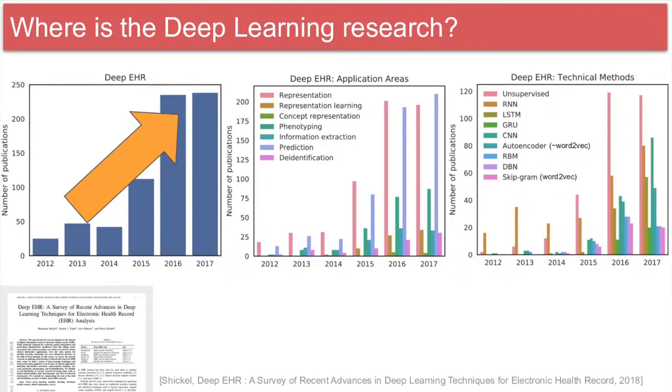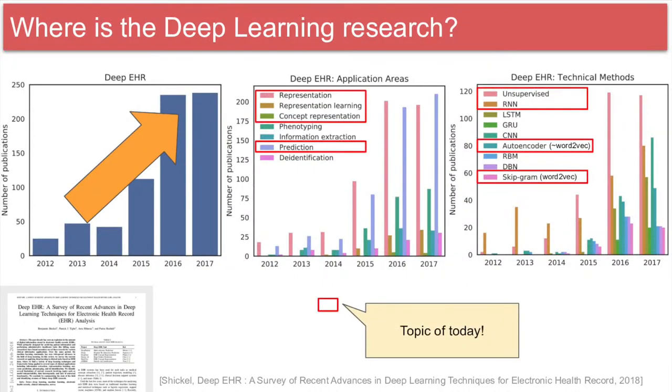In the field of EHR, let's look at what methods are currently being used. A study in 2018 produced the statistics shown here. First, we can see that the overall trend of deep learning in EHR is going up, which is great. We can see that the main application areas are representation learning and prediction, with a large focus on unsupervised methods and sequence models. This is great, because that is what this talk is about.